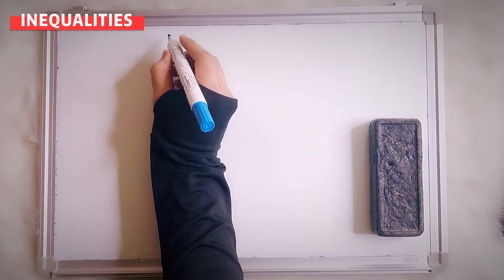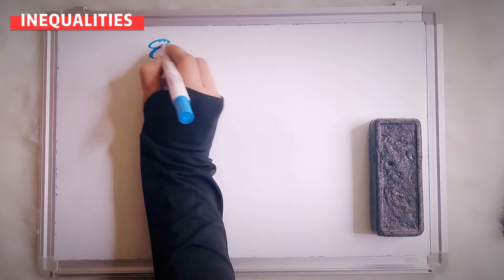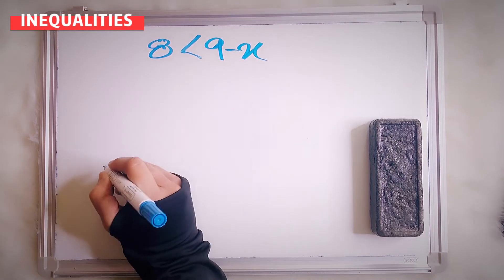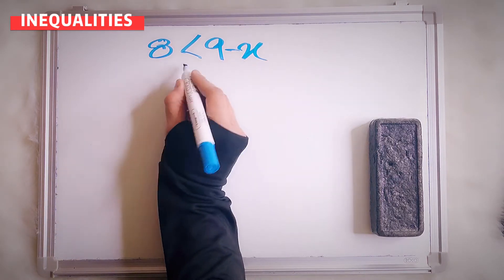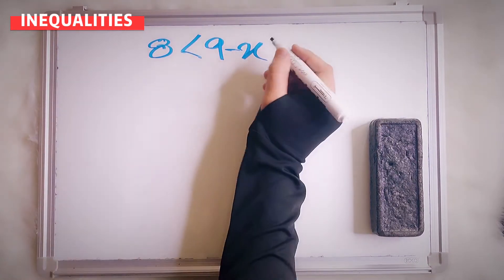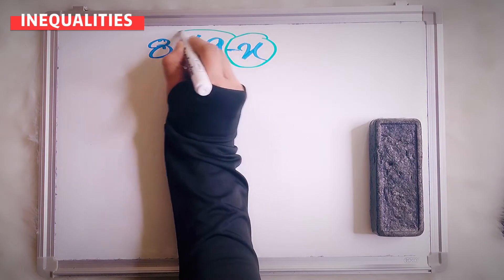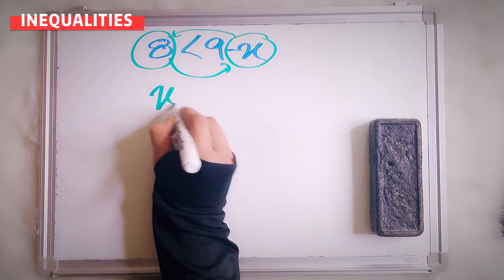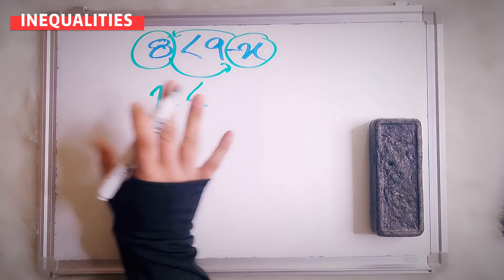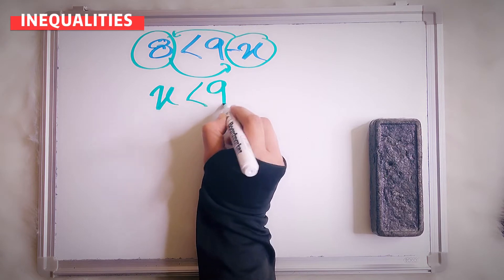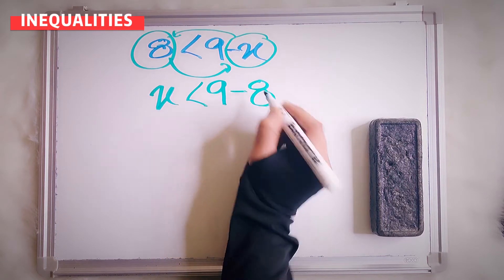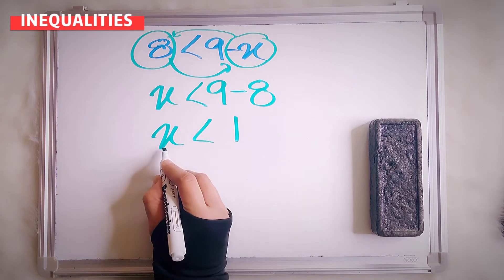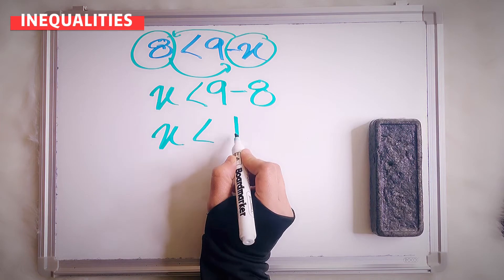Let's say I give you 8 less than 9 minus x. Same thing — I want to make x positive, so I bring it to this side. You switch. You bring to this side. So now x — the sign, you remain the same. So now it is 9 minus 8. So your x now will be 1. So x less than 1.